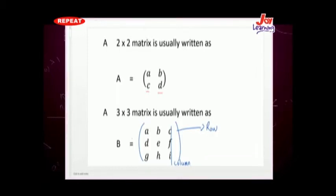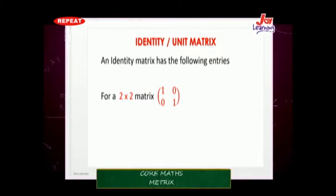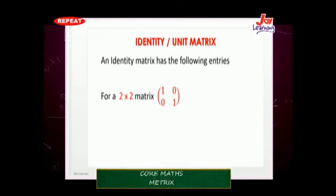Let's look at the identity matrix. The identity matrix is defined as follows: for a 2x2 matrix, the entries are 1, 0, 0, and 1. We call this an identity or unit matrix, which has ones on the diagonal and zeros elsewhere.